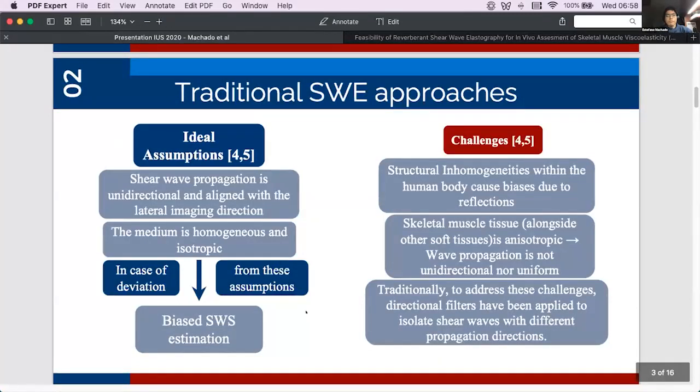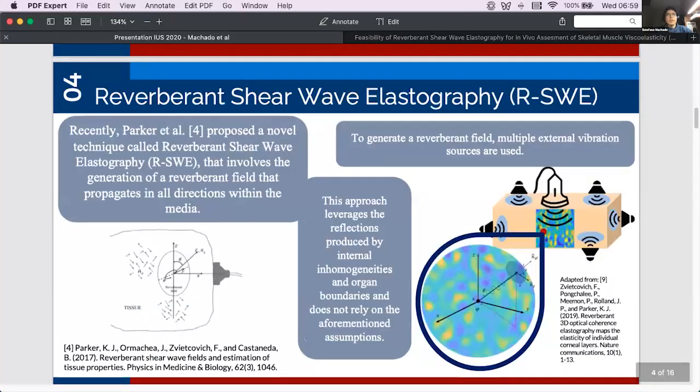Traditional shear wave elastography approaches assume that shear waves propagate unidirectionally and in alignment with the lateral imaging direction. The reality though is that the structural inhomogeneities within the human body cause biases due to reflections and that soft biological tissues like skeletal muscle are anisotropic and therefore the aforementioned assumptions are not realistic. So traditionally to address these challenges, directional filters have been applied in order to isolate different propagation directions.